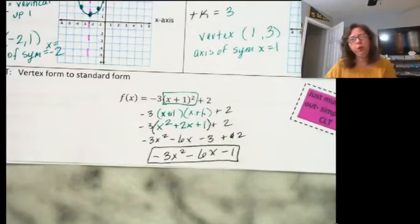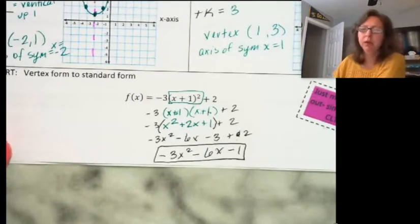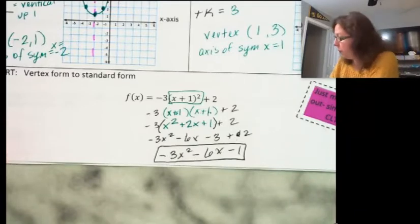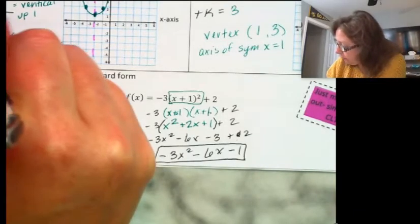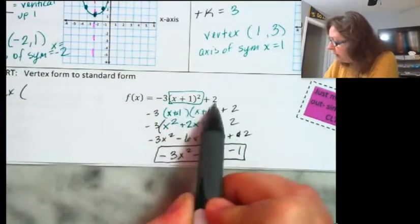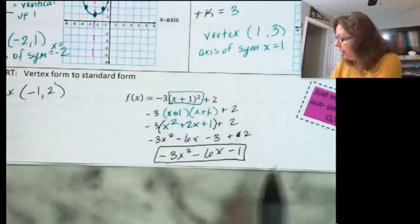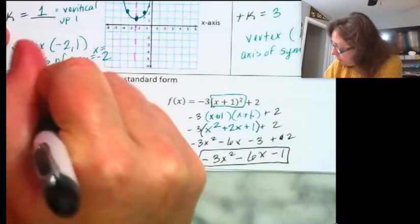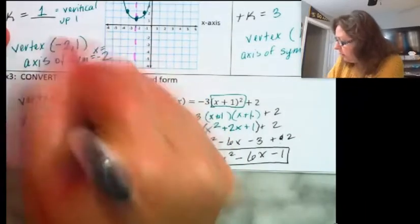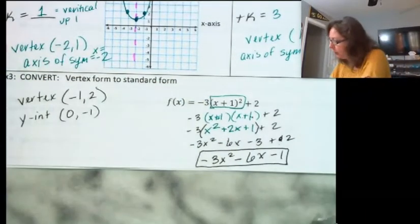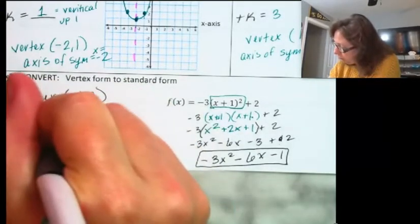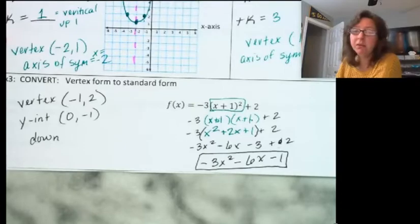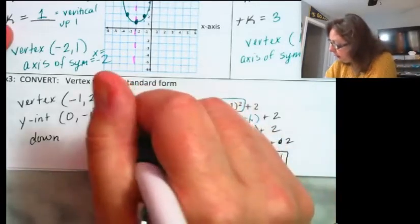Notice that the a value is the same for both forms. Looking at the two forms, I can tell you the vertex is at negative 1 comma 2. I can tell you the y-intercept is at (0, negative 1). And I can tell you that we're going to be going down — the a value is negative 3.